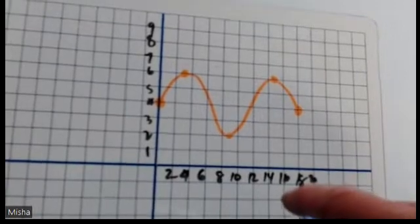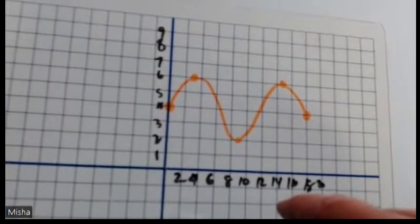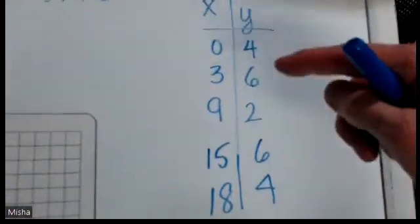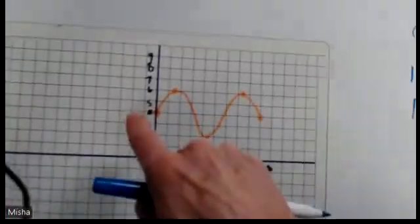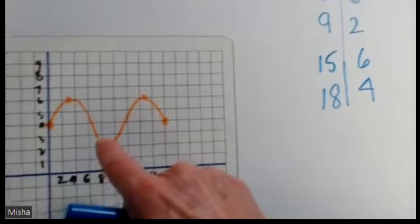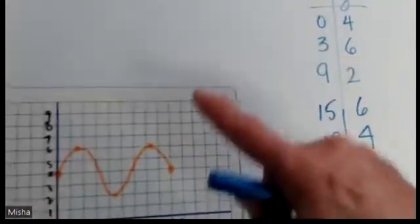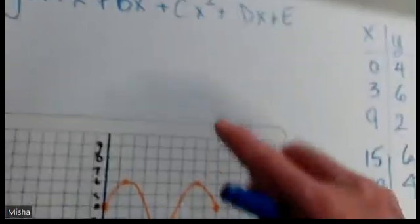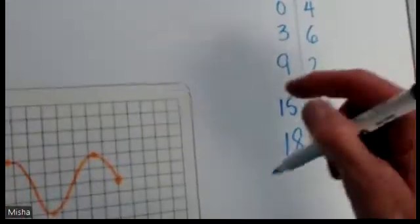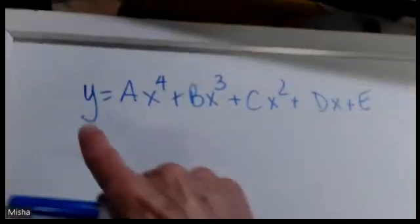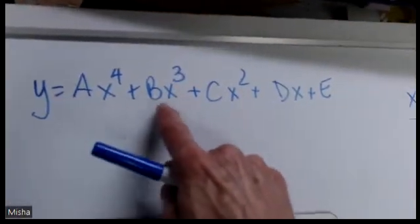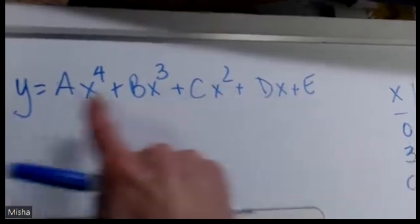So what we're going to do is we're going to put the points, these points, we'll write down the points. So we have 0, 4, 3, 6, 9, 2, 15, 6, and 18, 4. We're going to put them in the calculator. And what will happen is, you'll see, we'll put these in and we'll be able to press a number that will give us these coefficients. This is the standard form of a quartic.